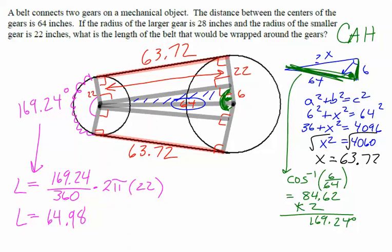However, one more thing needs to be included, and that would be the length of this arc over here on the right. We know that angle. To get the other angle, we would take 360 minus the 169.24. Now, again, I'm keeping all the decimals, so 360 minus that 169.24 is 190.76.